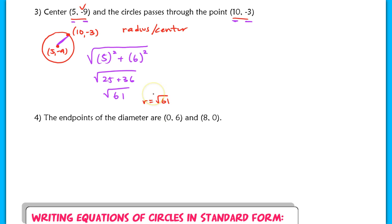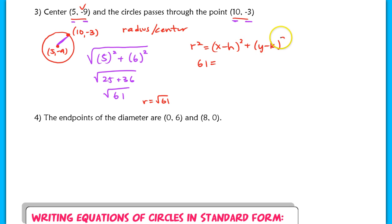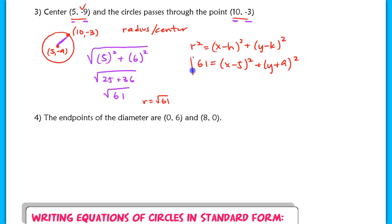Keep in mind we have to square that radius value when writing the equation. So r squared gives us 61. The equation is: 61 equals (x minus 5) squared plus (y plus 9) squared, using center (5, negative 9). There is the equation of the circle for number 3.